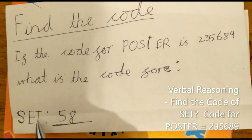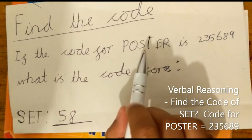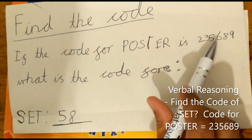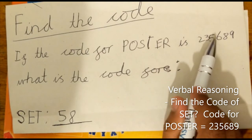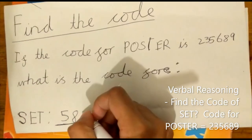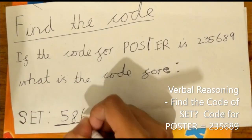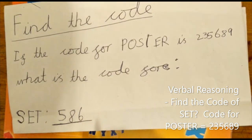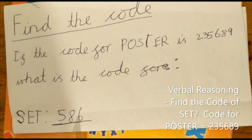The last letter for set is T. We need to find T in poster. T is the fourth letter, so we need to find the fourth number in the code. And the fourth number in the code is 6. The 6 will be the last number for the code of set. So the code for set is 586.